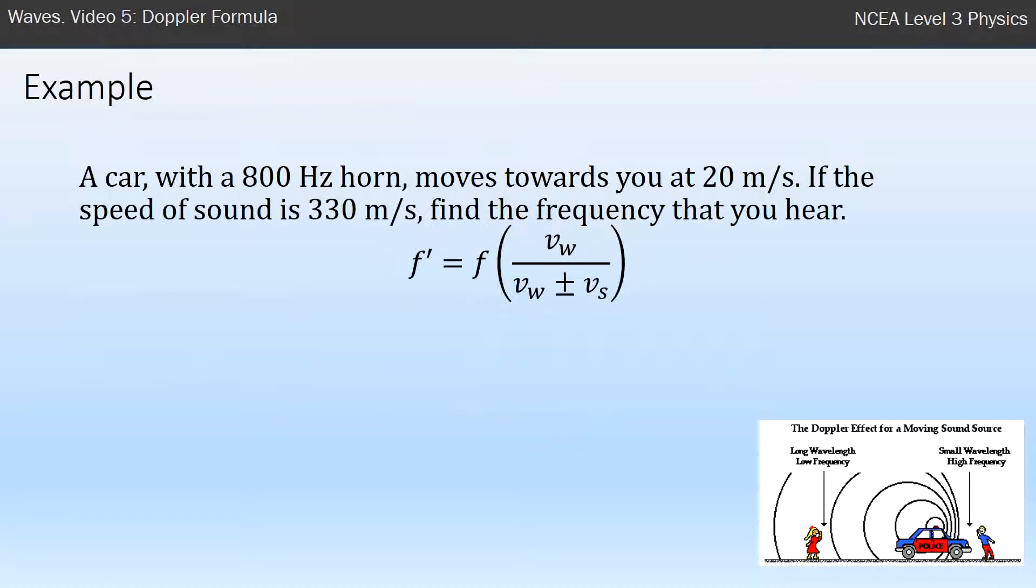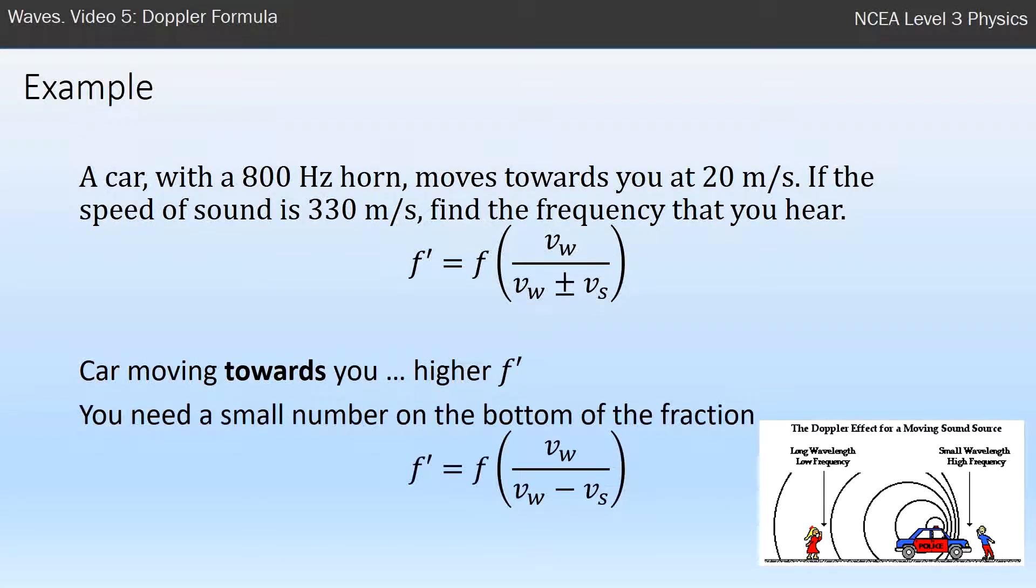As an example, a car has an 800 Hz horn, it moves towards you at 20 m/s, so it's going towards you. The speed of sound is 330 m/s. Find the frequency you hear. First of all, I know that the car is moving towards me so it's going to have a higher frequency. I then go through this process of saying to get a higher frequency I need to divide by a small number.